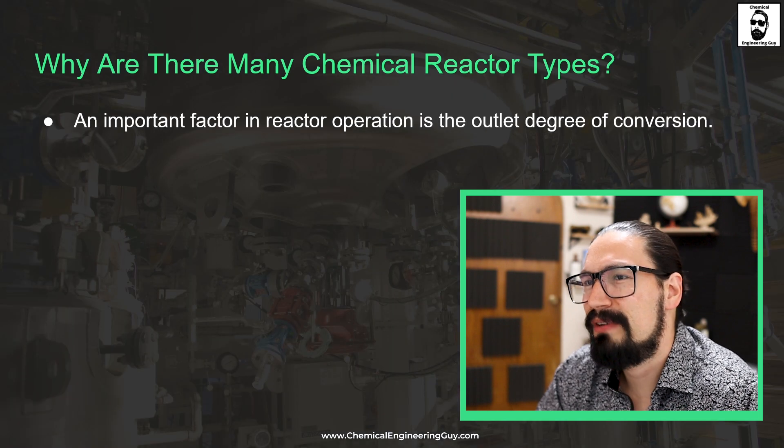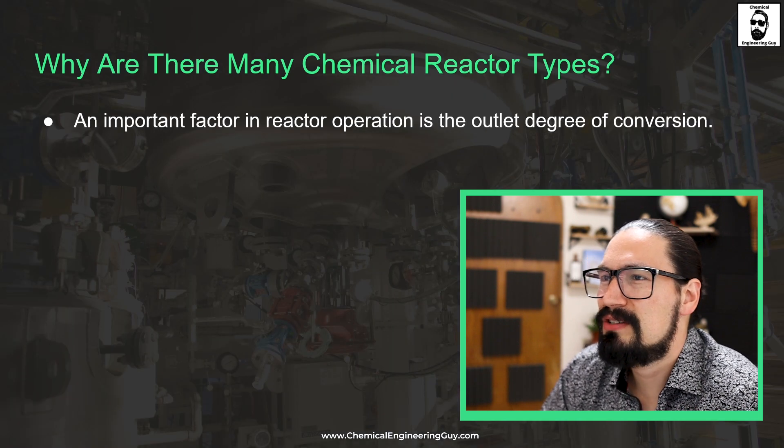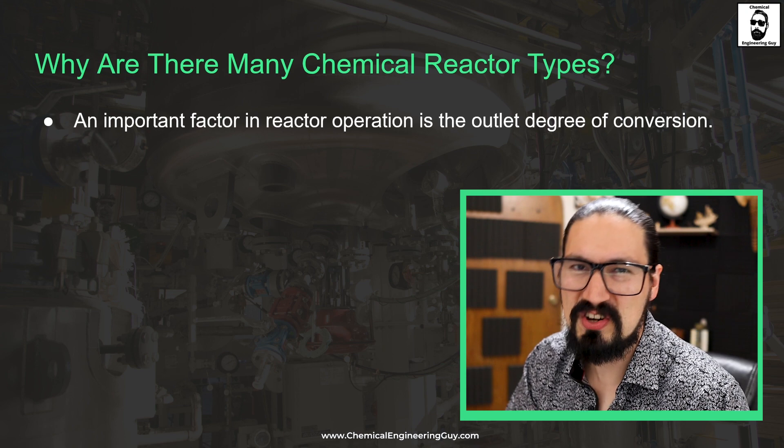An important factor in reactor operation is the outlet degree of conversion — how much material you're actually converting by the end of the reaction. Whether it's 95%, 98%, 99%, or even 10%, the acceptable conversion depends on the specific process. We'll cover that in more detail later.